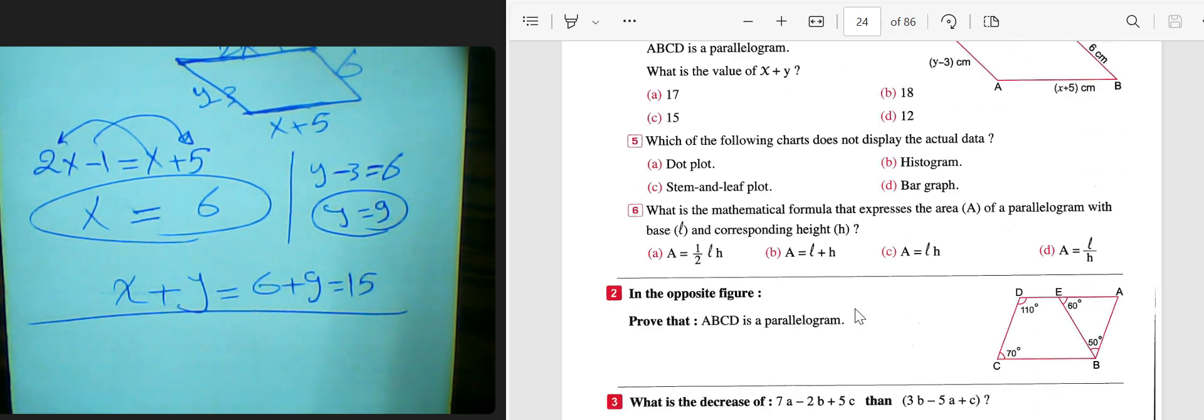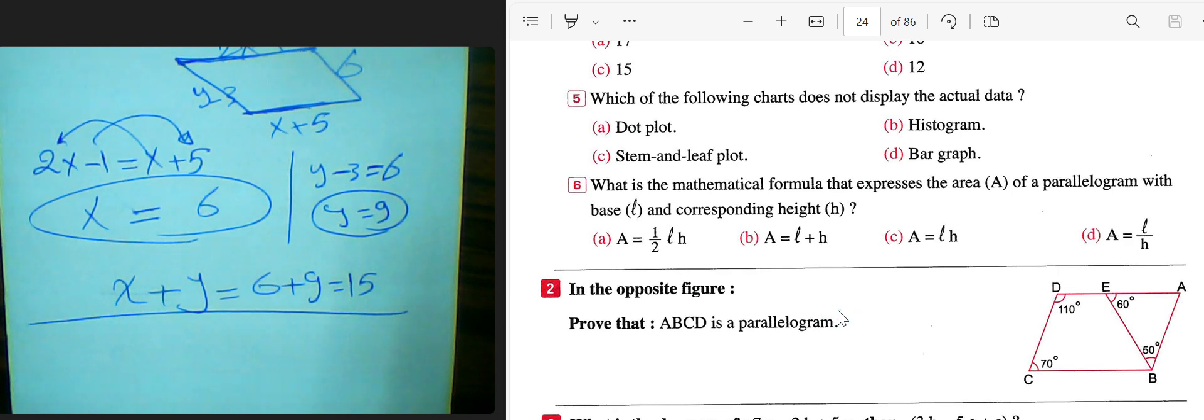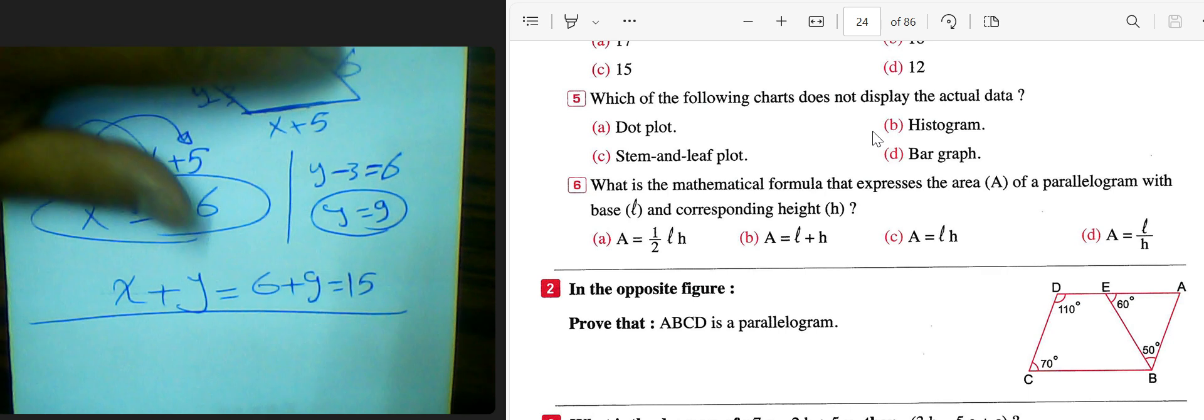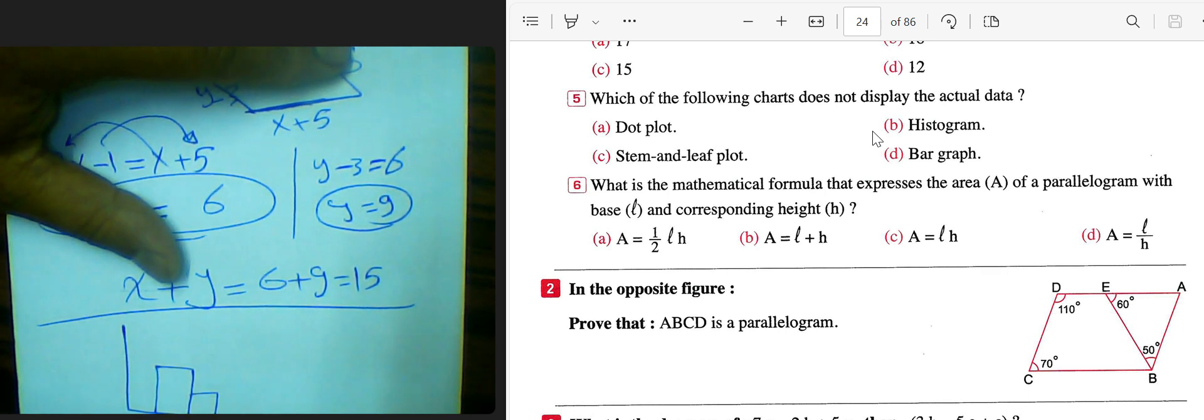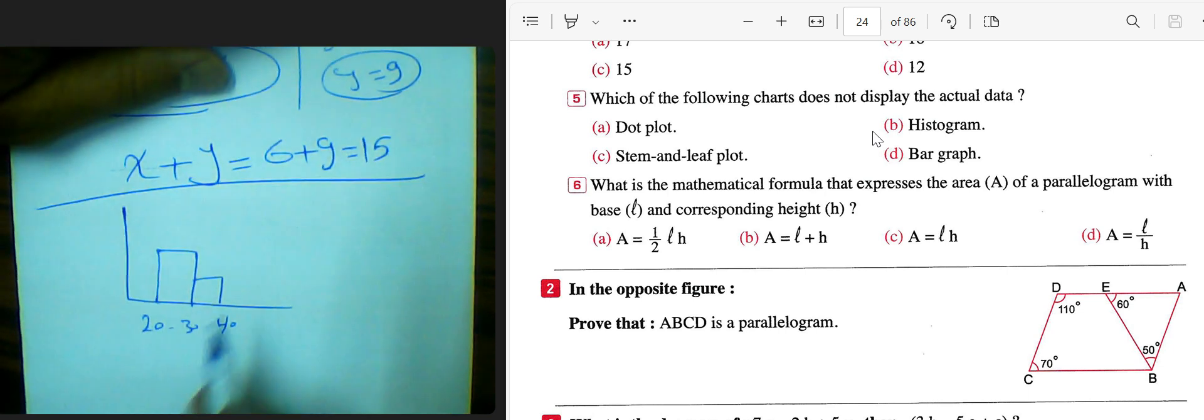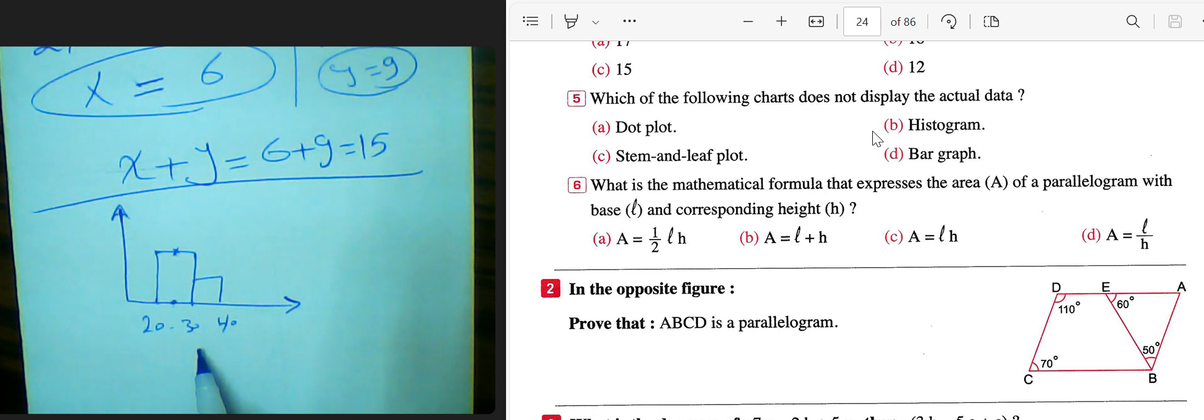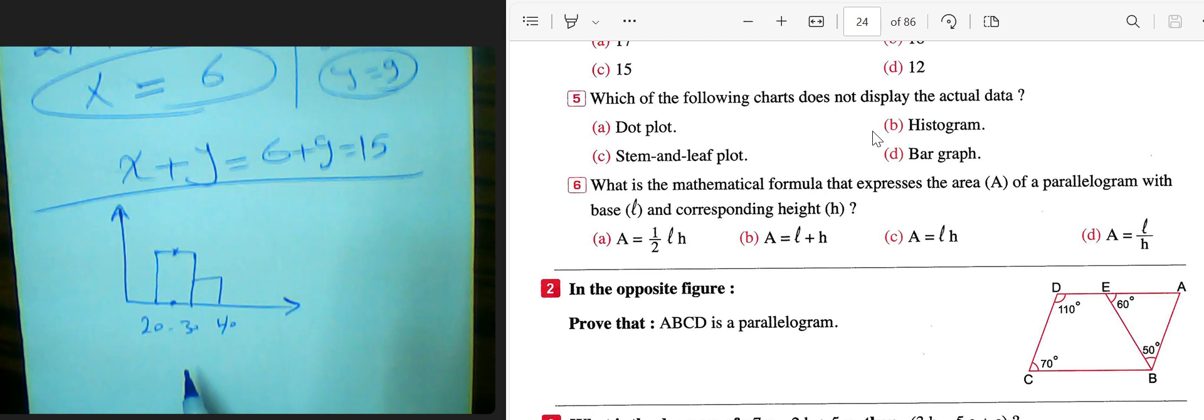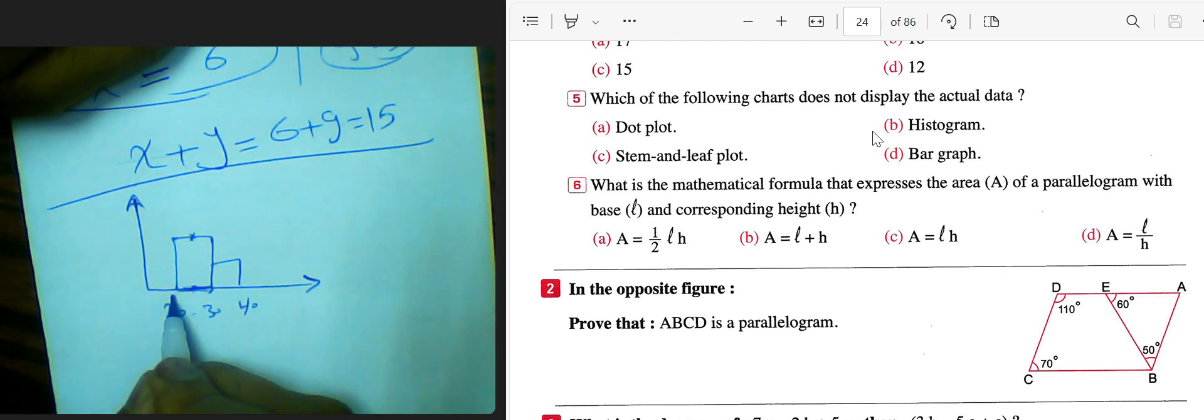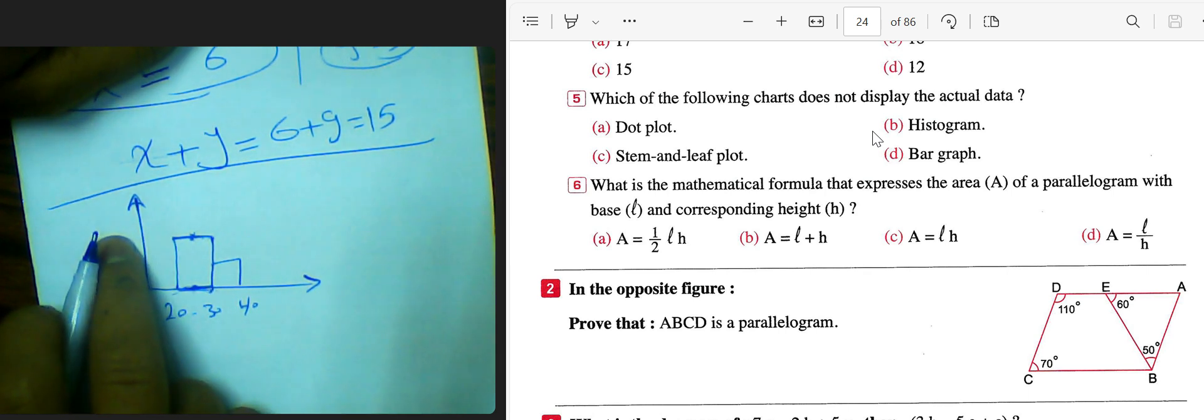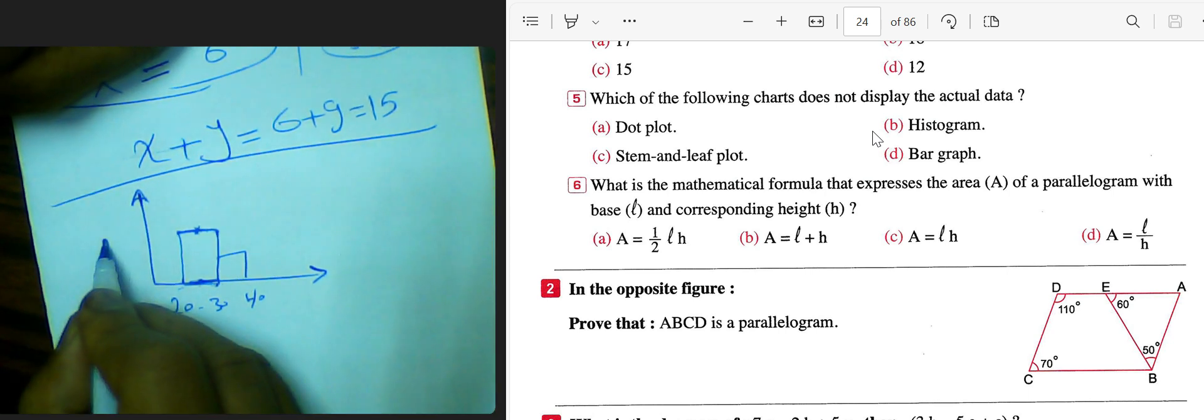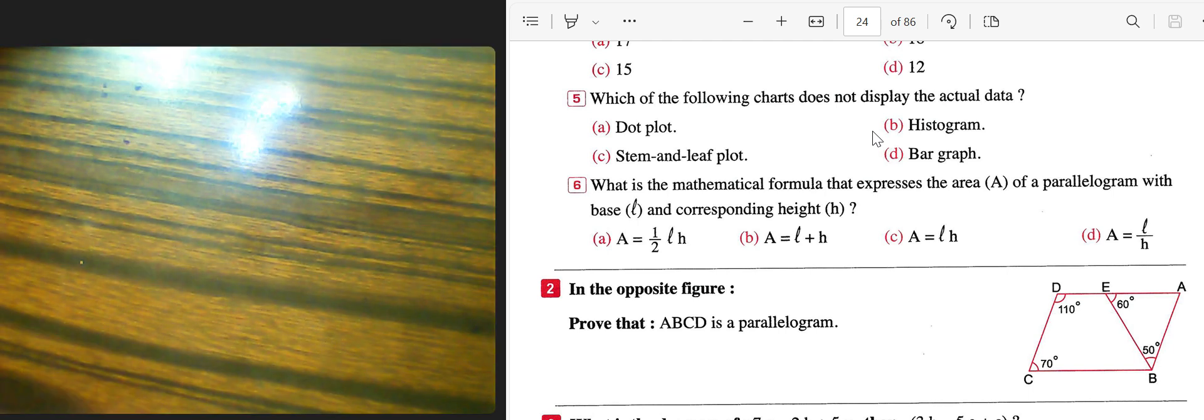Next question. Which of the following charts doesn't display the actual data? It will be histogram, because in histogram we have intervals such as 20 to 30 and 30 to 40. If you want to find the value of the number here, 25 for example, it will disappear. One of the disadvantages of histogram is that I can't determine the actual data values. If I want to know the actual values, I won't be able to get them. Choose histogram, number 5.